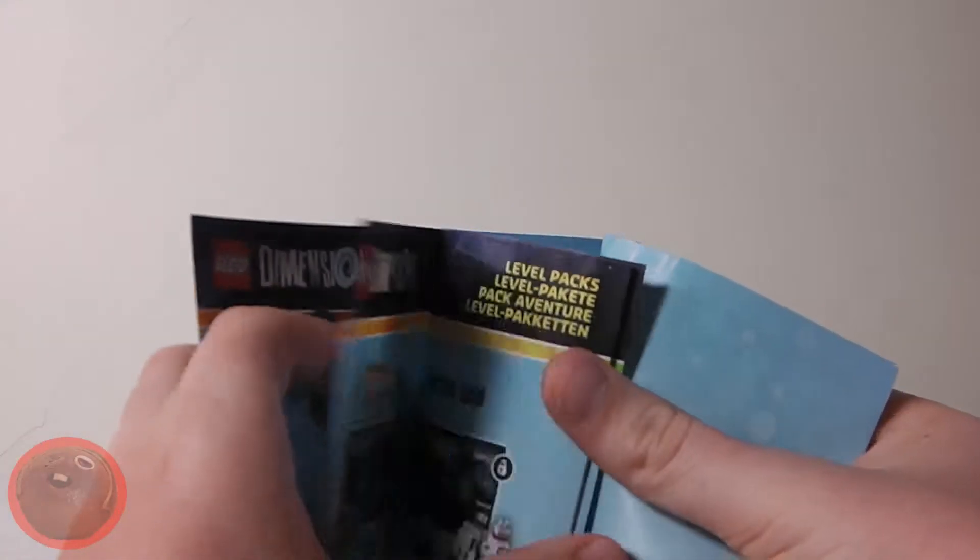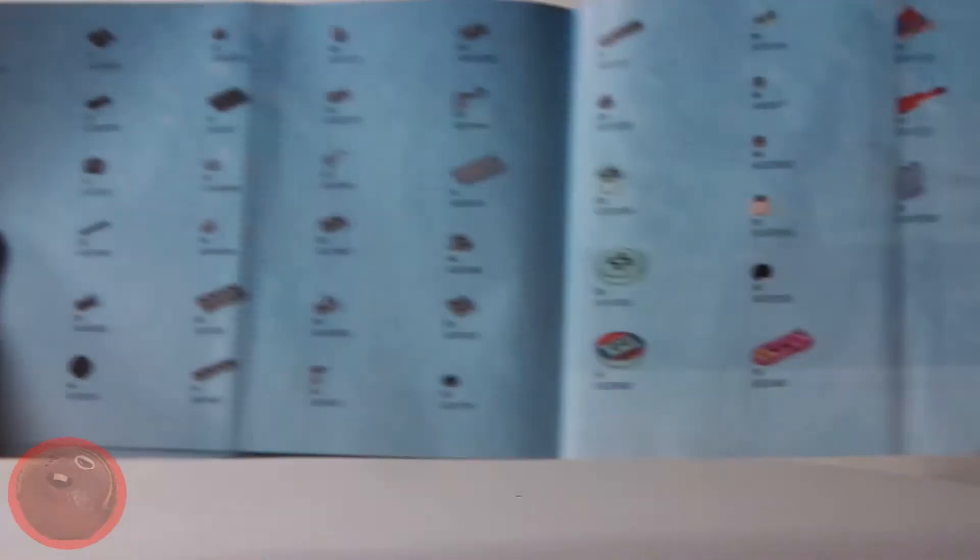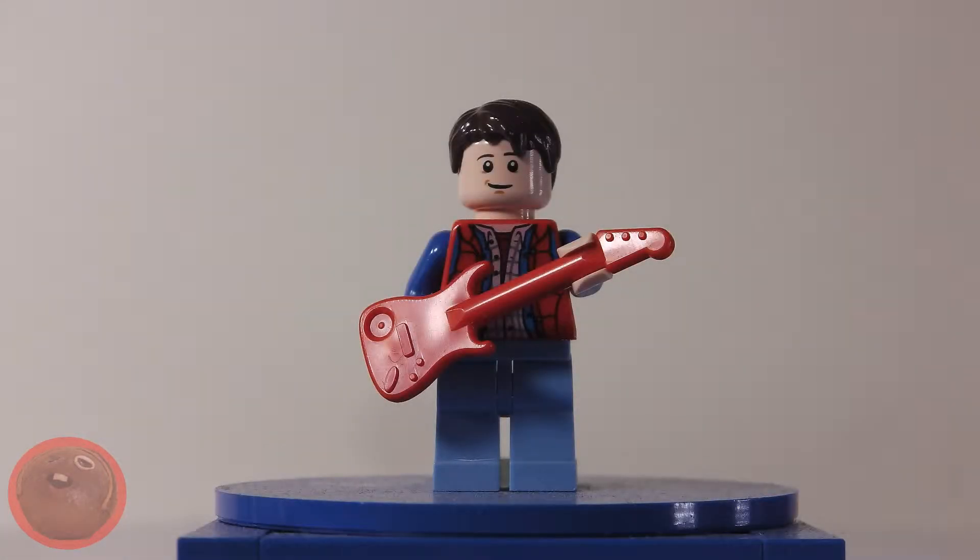Package number is 71201, comes with one minifig and two builds for the game. Here is the front of the box and if we turn it around you can see that it's got good packaging, I really like it and here is the back of the box.